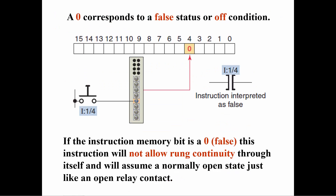If the external switch is not closed, a 0 is placed at the specified address in the input table and the examine if closed instruction becomes false, and there is no rung continuity through the contact. This is the same as a normally open contact on a relay whose coil is not energized.